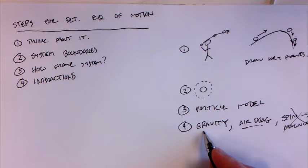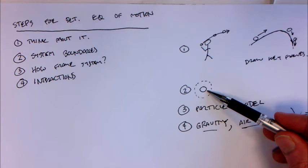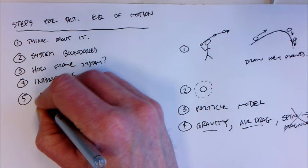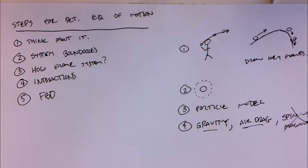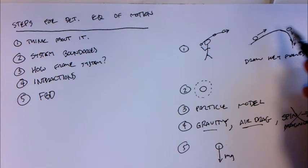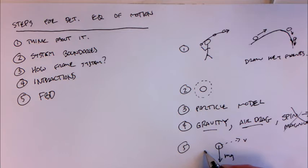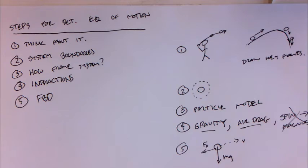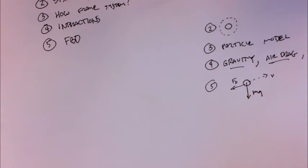We know how we're modeling the system — it's a particle — and we know what the interactions are between the system and the rest of the universe. This leads us to the fifth thing we need to do: identify the free body diagram. Our free body diagram for the ping-pong ball shows gravity acting on it and also a drag force. The drag force is going to counteract the motion, so if the ping-pong ball is moving in one direction, the drag force will be opposite the velocity.